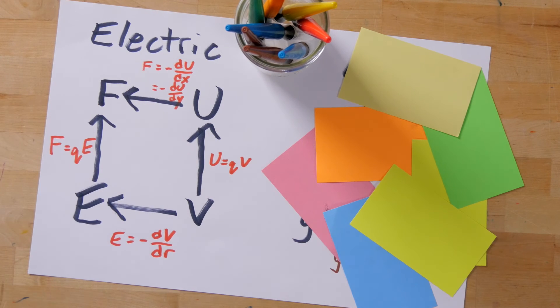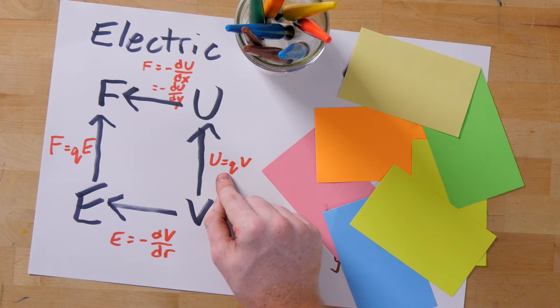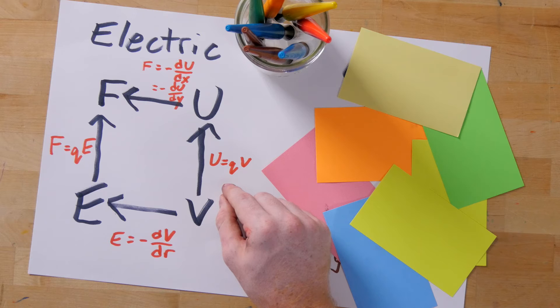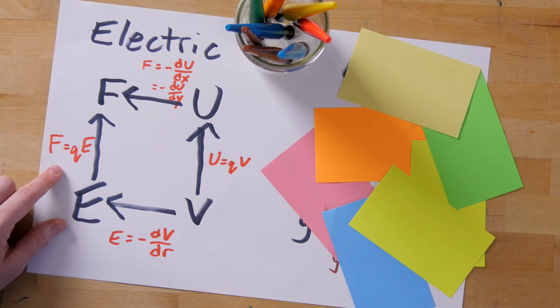If you want to move from bottom to top on the diagram, you simply multiply by charge. So when we talked about point charges, the electrical potential energy of a point charge was given by this equation. Just multiplying potential by Q gives you the electric potential energy. Similarly, if you multiply electric field by Q, you get the force.